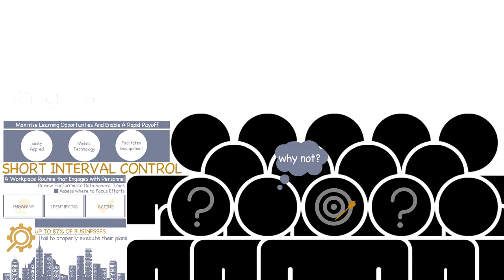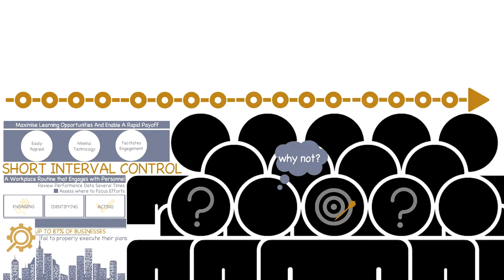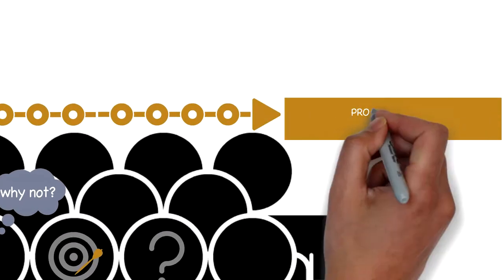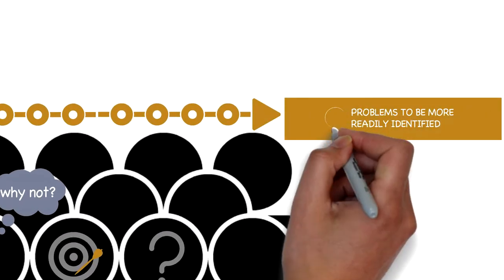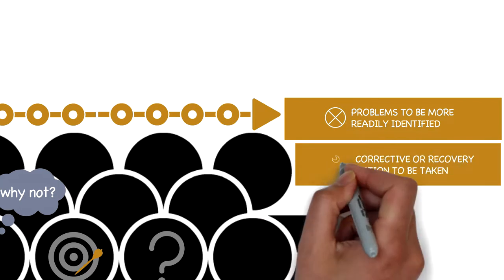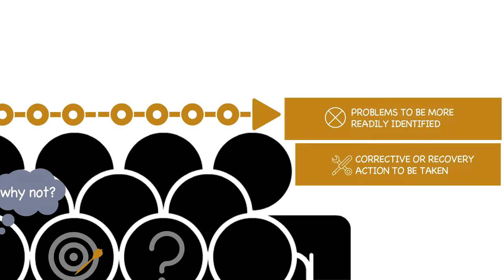While the actual interval between review points will vary depending on the nature of the activity and the timeframe for executing the plan, the key points are that the interval needs to be short enough to allow problems to be more readily identified before the root cause is clouded by other variables and corrective or recovery action to be taken to support achievement of the plan.